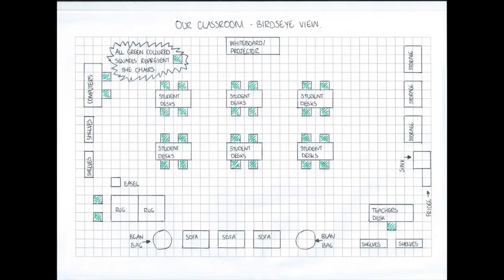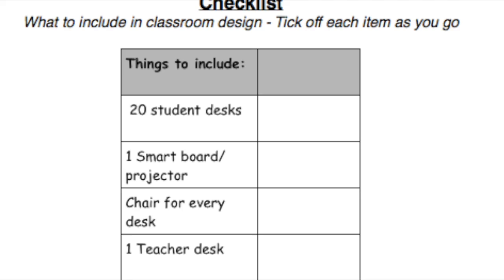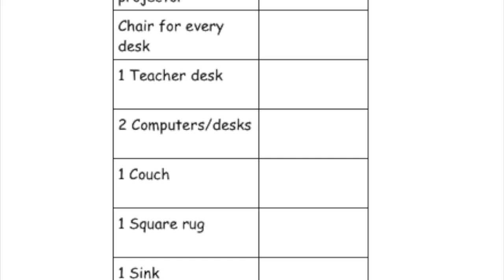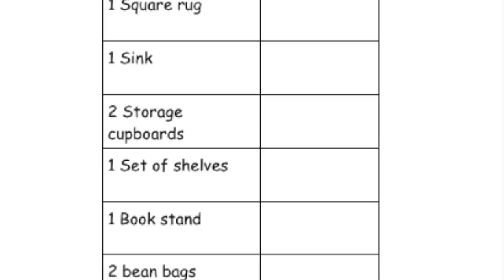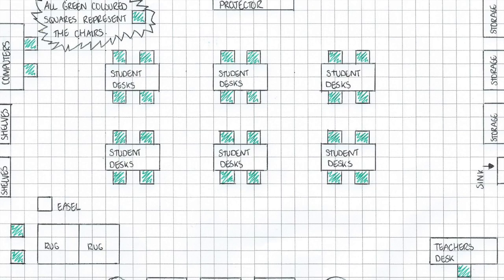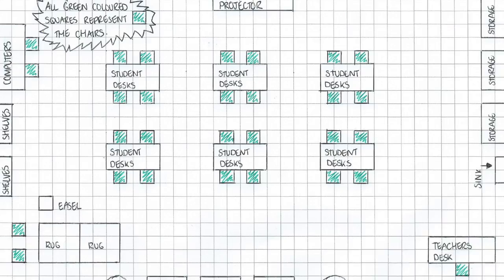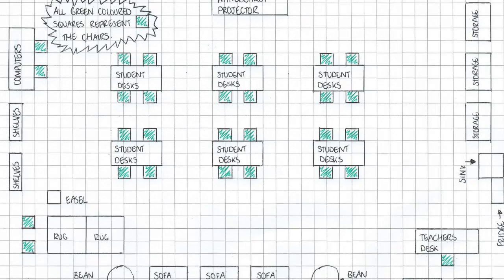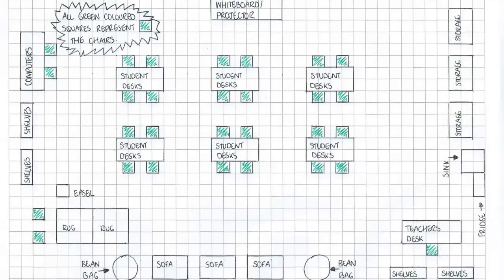The students are also provided with a checklist of all the items that need to be included in their new design, including desks, chairs, computers, etc. Students must include all the items on the checklist. This stage allows for students who are struggling to accurately draw shapes to use pre-cut out pictures of classroom objects and glue them onto their grid paper. Through this stage, the teacher will provide students with formative feedback and prompt them with questions which get students to think more critically about their design.